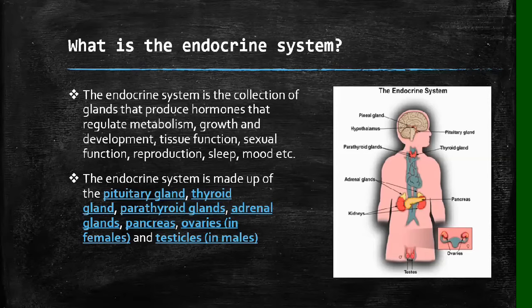The endocrine system is made up of the pituitary glands, the thyroid glands, the parathyroid glands — which we're not going to discuss in this video — the adrenal glands, the pancreas, the ovaries in females, and the testicles, or testes, in males. The endocrine system is a very important system because without it, I think we would not be able to survive, as it works together with our nervous system.